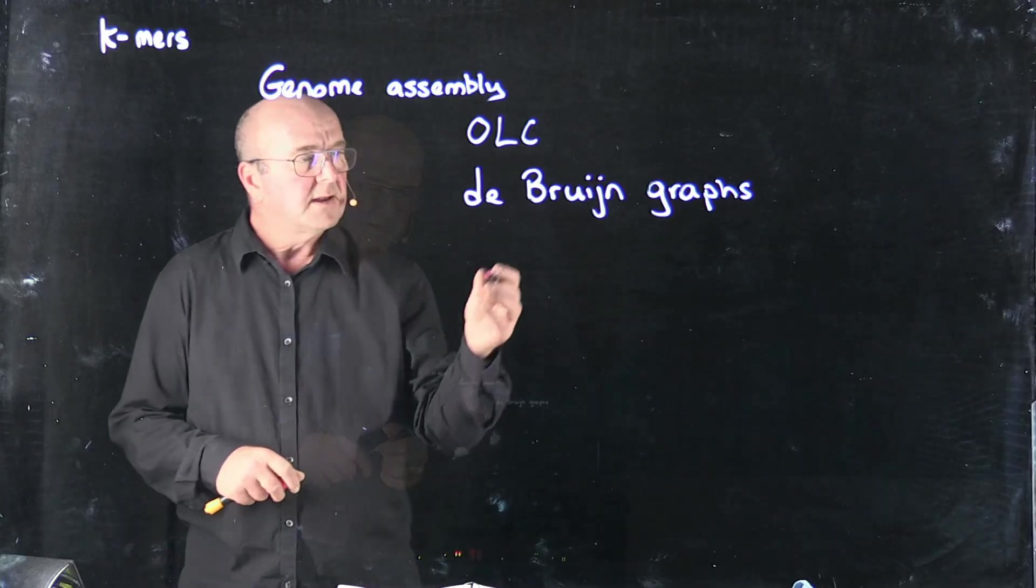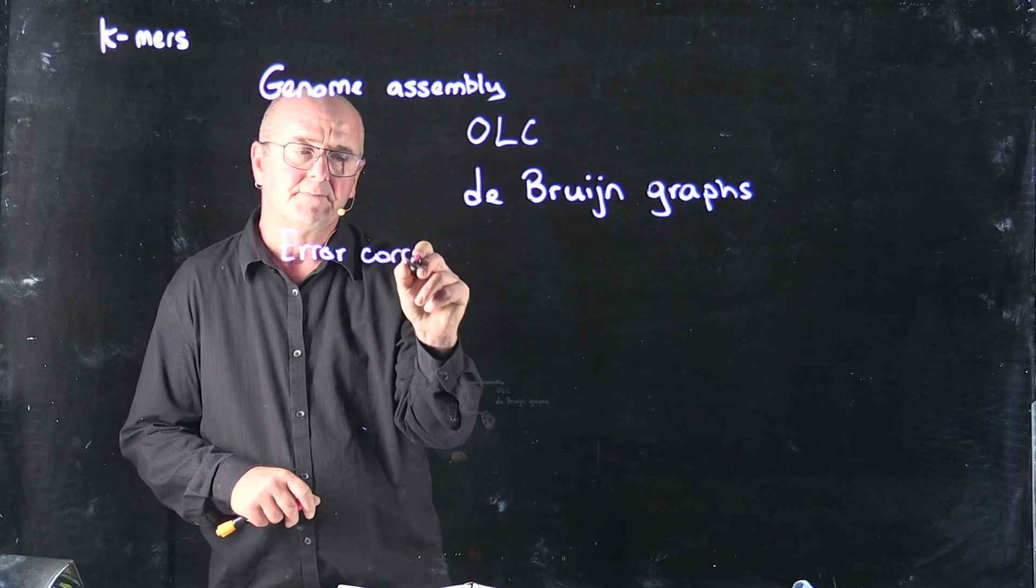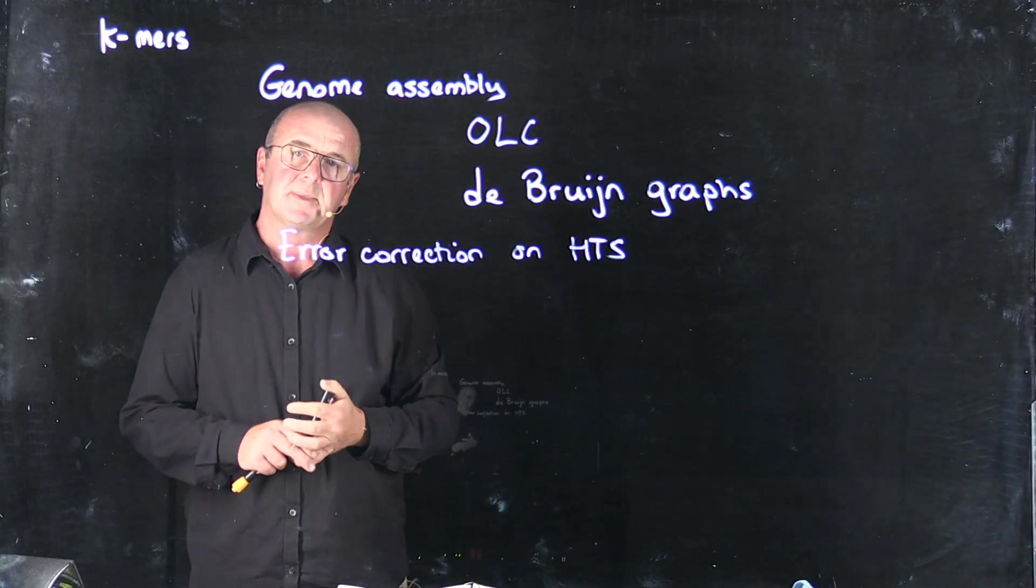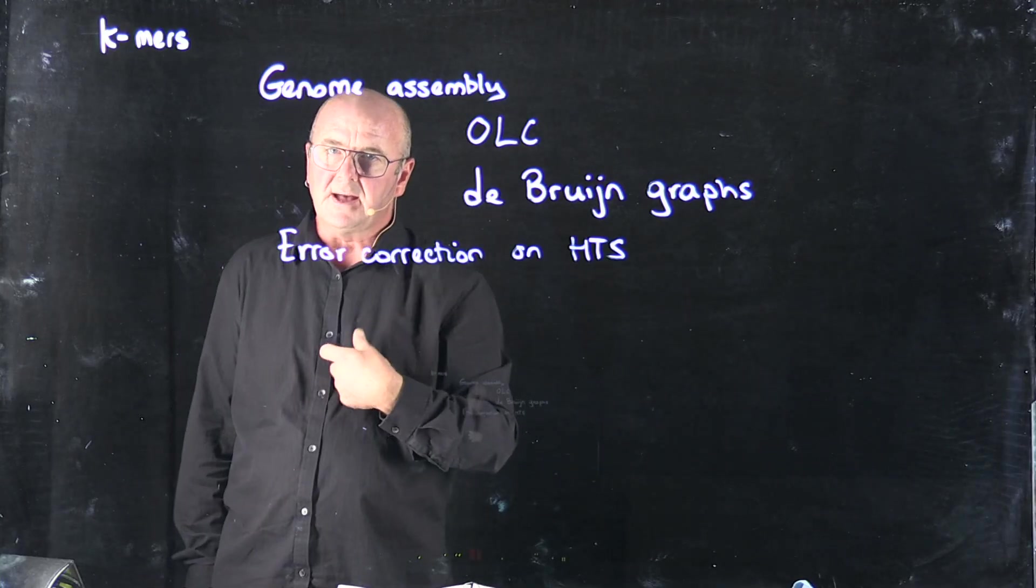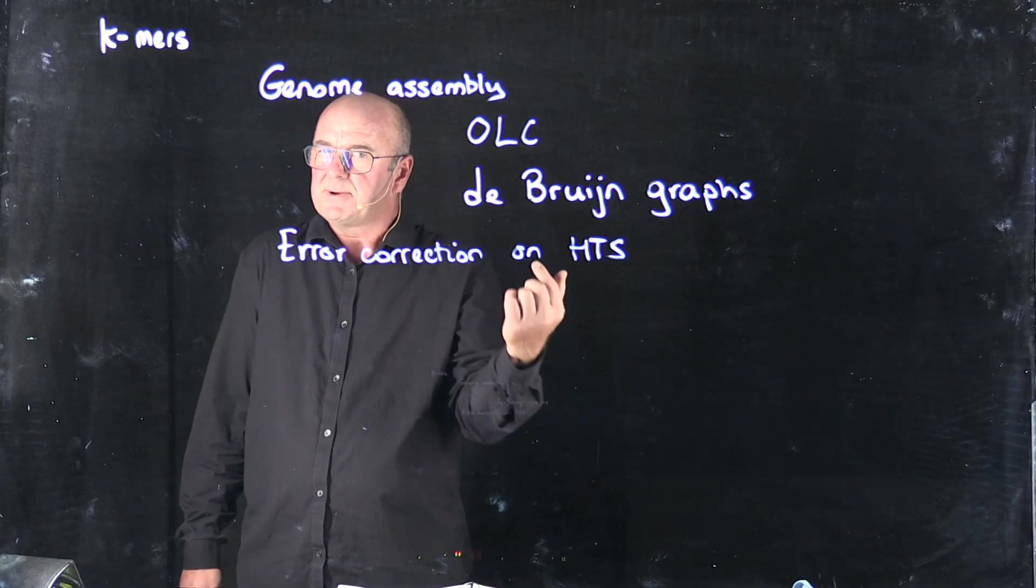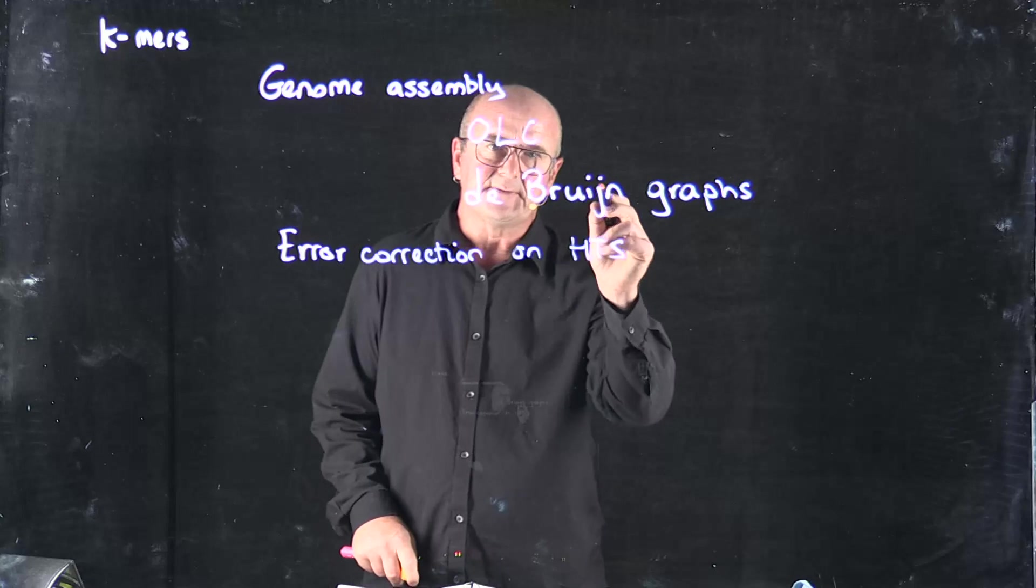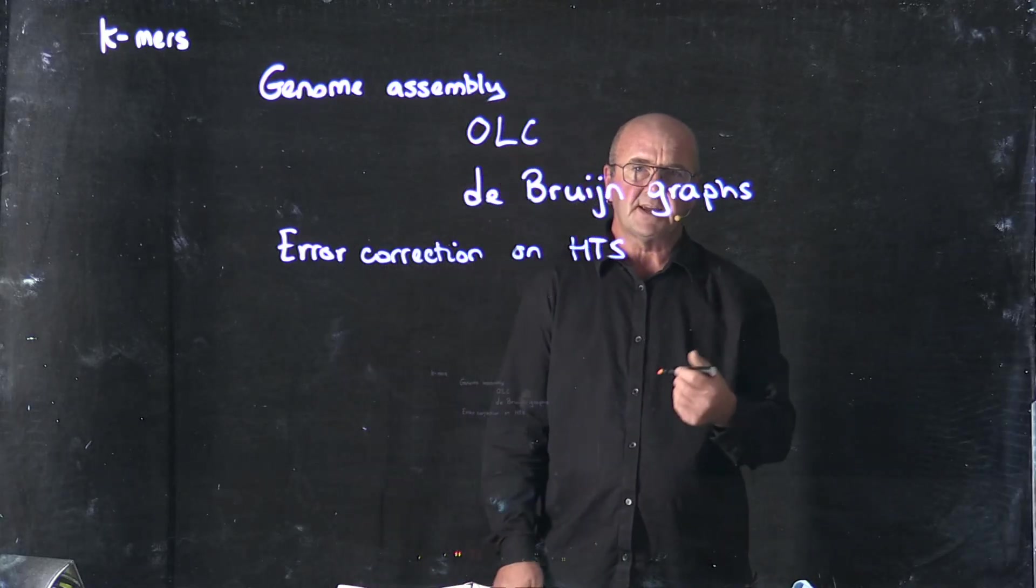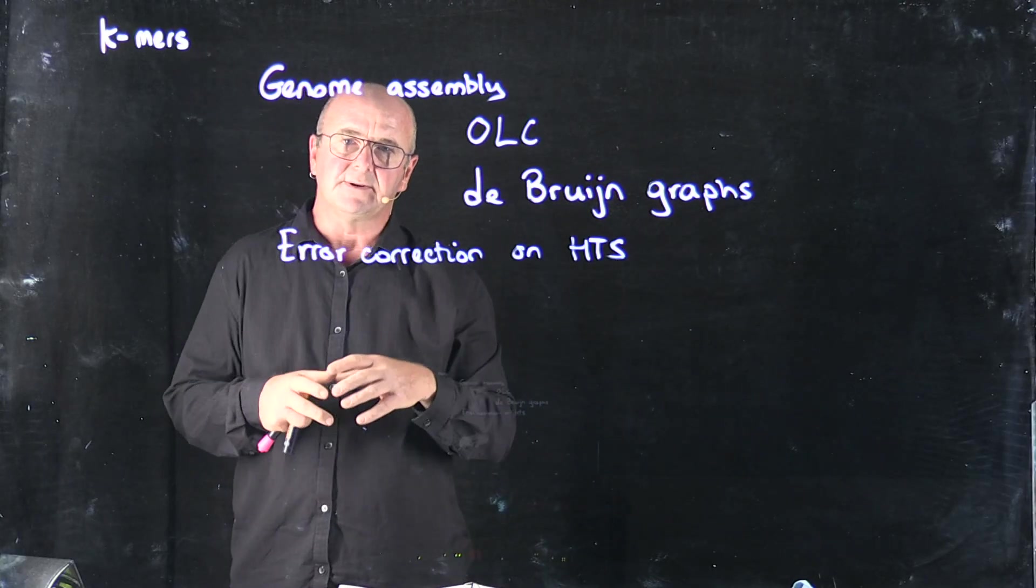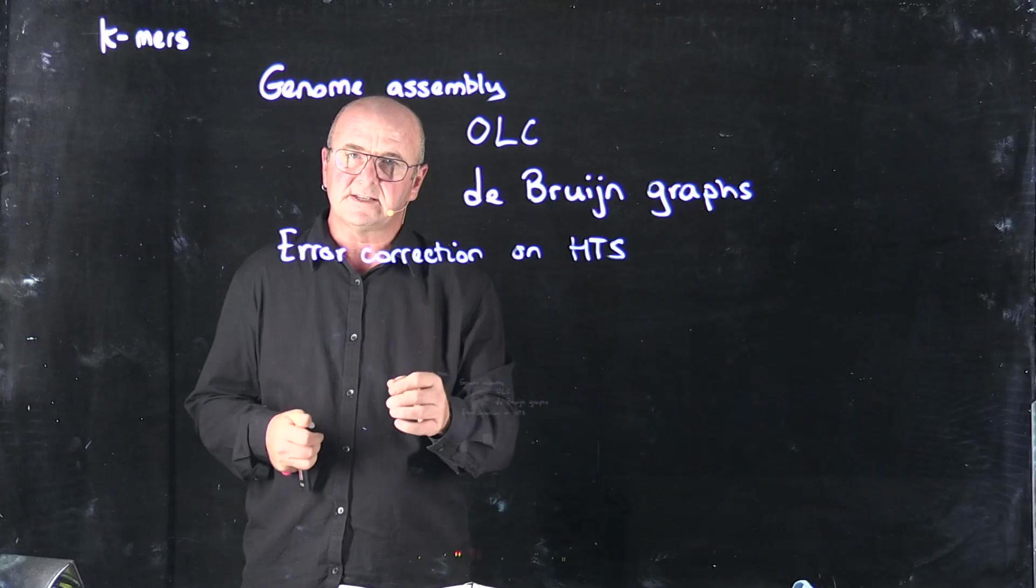We also may want to do, for example, error correction on next generation sequence data. So for example, if I'm sequencing my genome and I sequence my genome to a thousand-fold coverage, if I find a read once, that's probably a mistake in the sequence. And those little errors cause huge problems for doing assembly, for doing mapping, for doing anything like that. So one of the ways that we do error correction is by counting K-mers in the sequence and looking at the underrepresented K-mers. Those underrepresented K-mers probably represent errors in the sequence, and we can remove them before we do any sequence analysis.